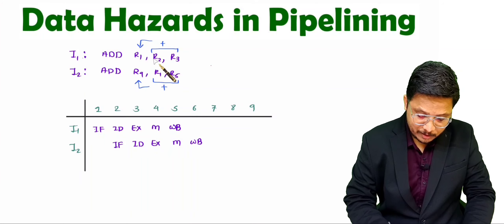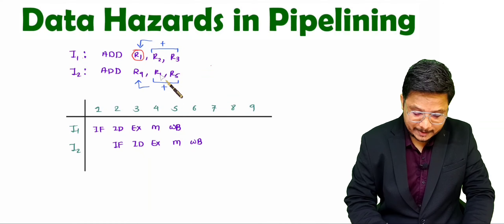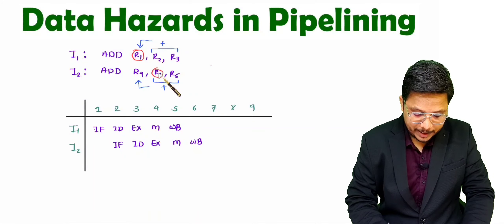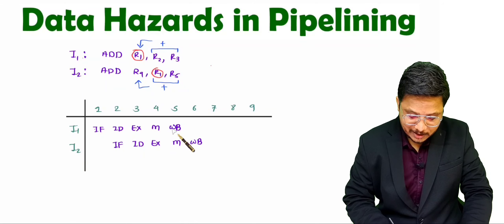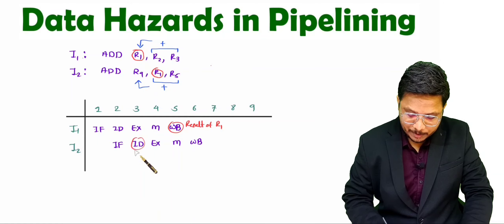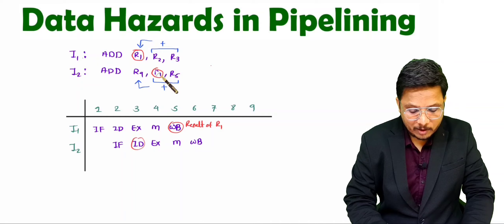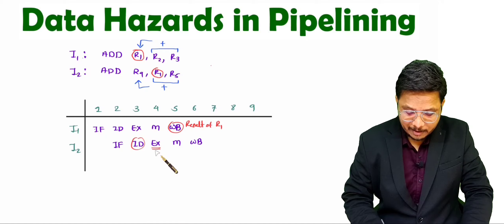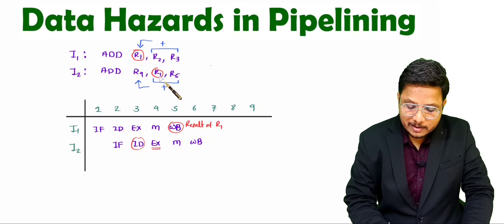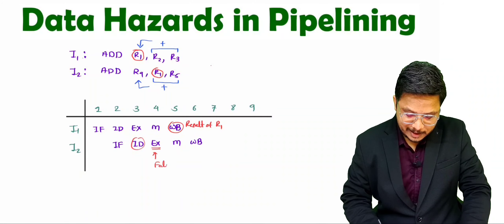Now observe how the instruction is actually executed. R2 plus R3 is added and the result is stored in R1 at the write-back stage. But I2 depends on R1 as an input operand — it depends on I1. The problem is that when I2's instruction decode stage runs, it reads the older value of R1, not the new one being computed by I1. So during execution, I2 will produce a false result inside R4. This is data dependency — the output of the first instruction is the input of the second instruction.